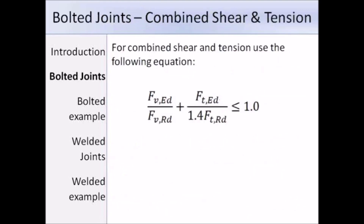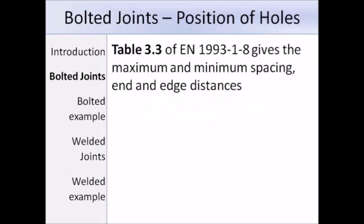This check is for situations where bolts are under combined shear and tension. The expression to use is from Table 3.4 of EN 1993 Part 1-8. That completes a quick summary of the main checks from Table 3.4.